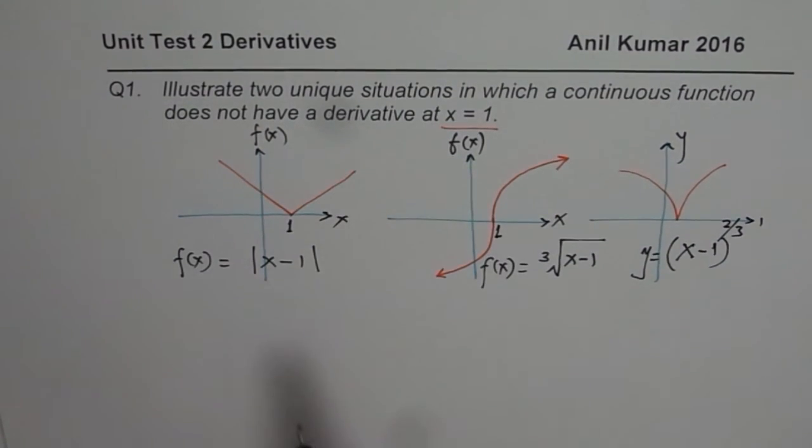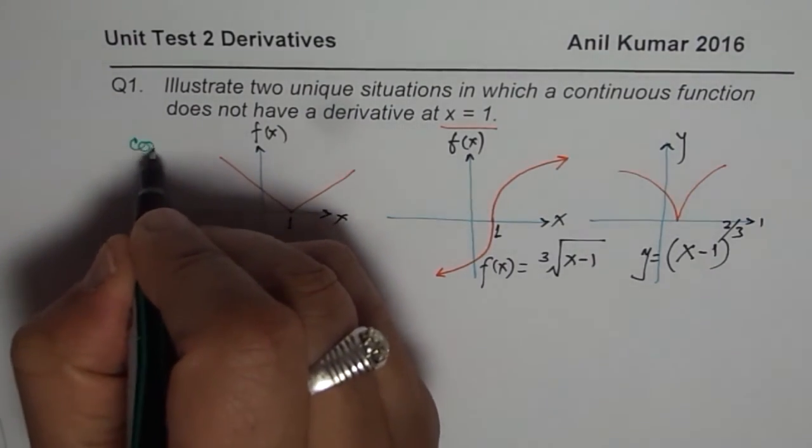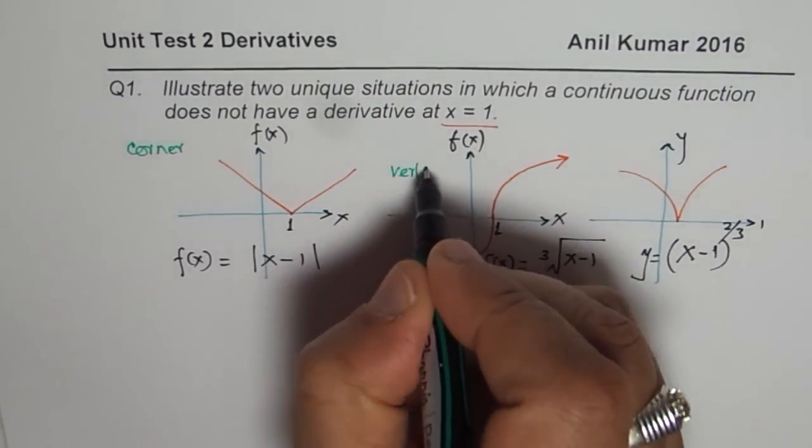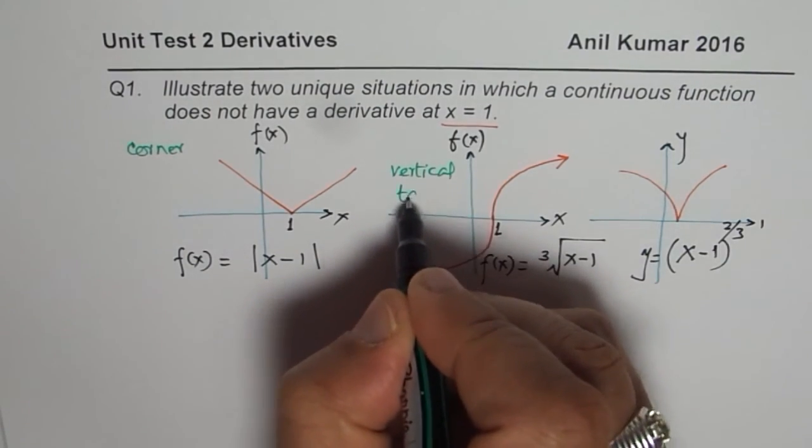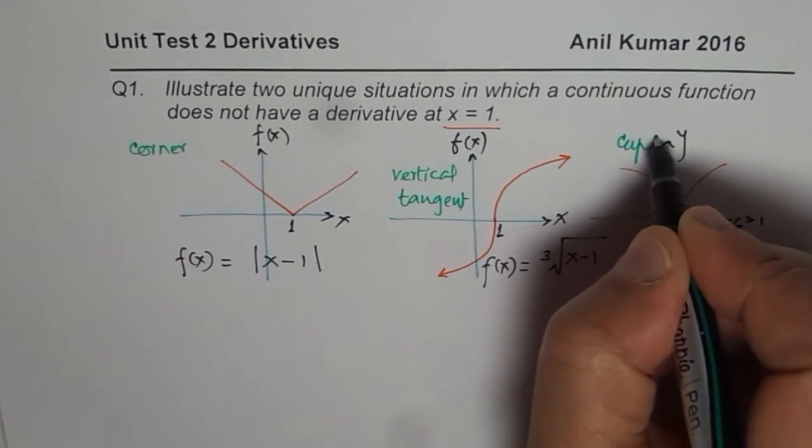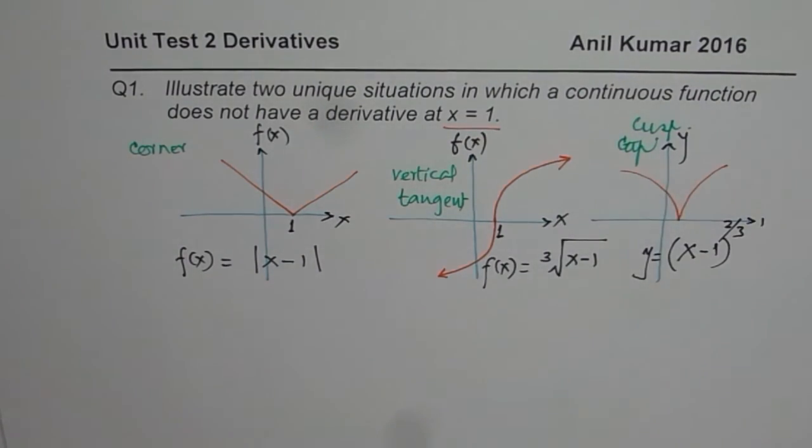And the reason is, you can see, we could have either a corner, vertical tangent, or a cusp. So these are the three conditions when a continuous function will not have derivative at a given point.